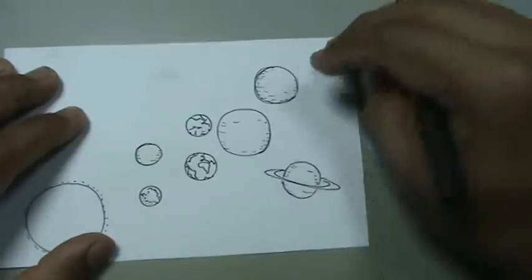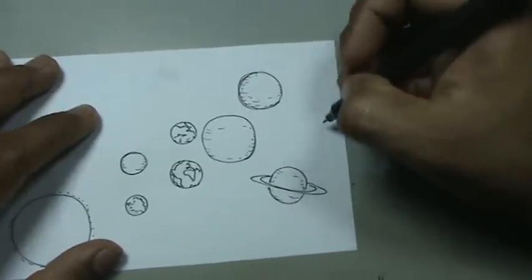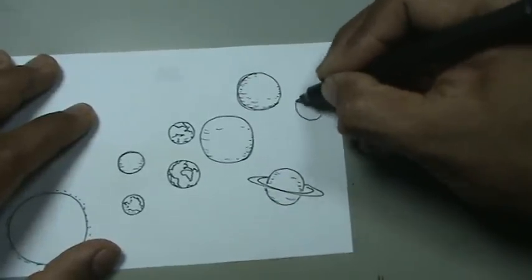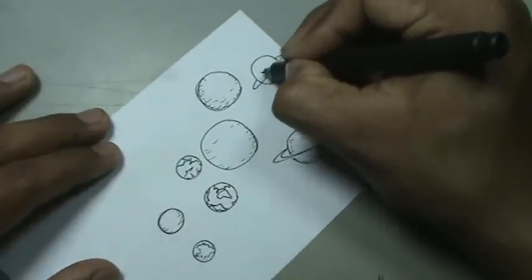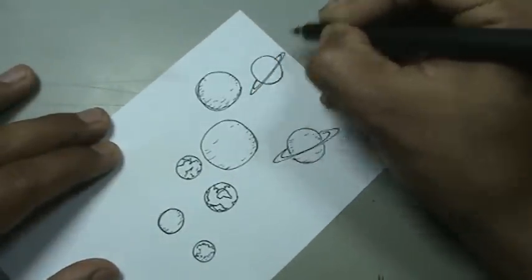Y tenemos también a Neptuno. Neptuno es un poco más pequeño ya. Pero Neptuno tiene un anillo. Tenemos a Neptuno.